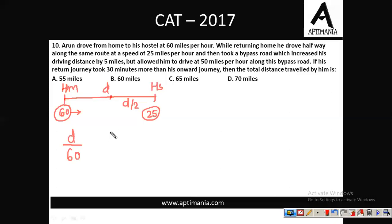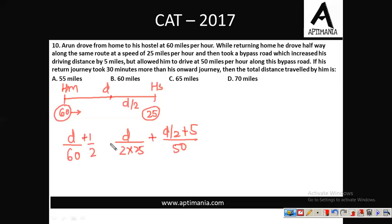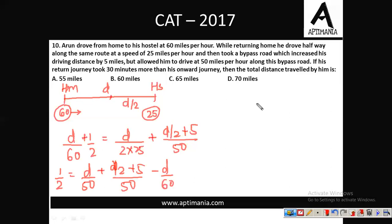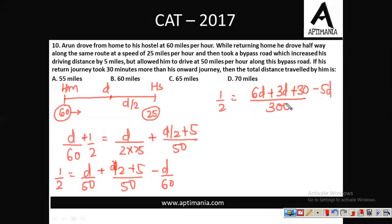In the return journey, he travelled D/2 miles at 25 mph speed and (D/2 + 5) miles at 50 mph speed. The time taken in the return case was half an hour more than the onward journey. Solving the equation — 1/2 = D/50 + (D/2 + 5)/50 − D/60 — taking LCM as 300, we get 60 + 3D + 30 − 5D, simplifying to 150 = 4D + 30, giving D = 30.